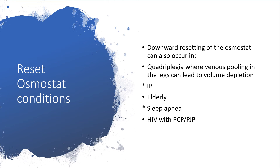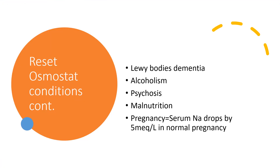Some people, particularly the elderly, will wake up in the morning and begin to feel unwell, which will trigger a report to their doctors at the clinic. By the time electrolytes are done and everything evaluated, it will come down to reset osmostat. It could also occur in dementia, in alcoholism — beer potomania specifically — in psychosis, and in malnutrition.